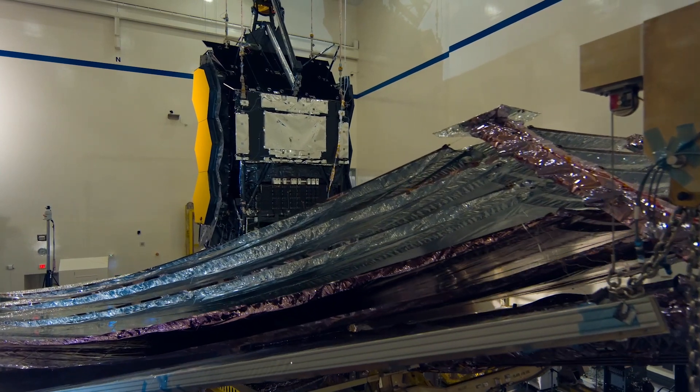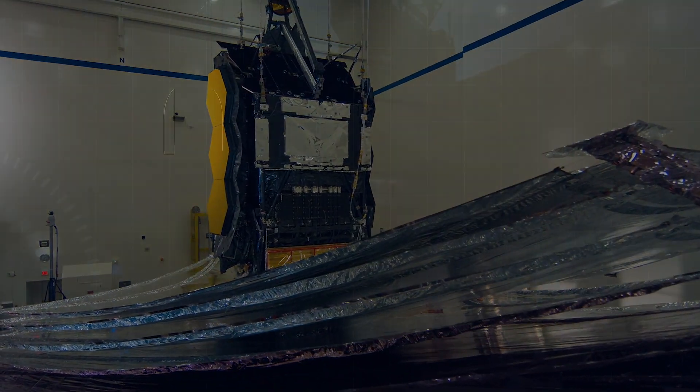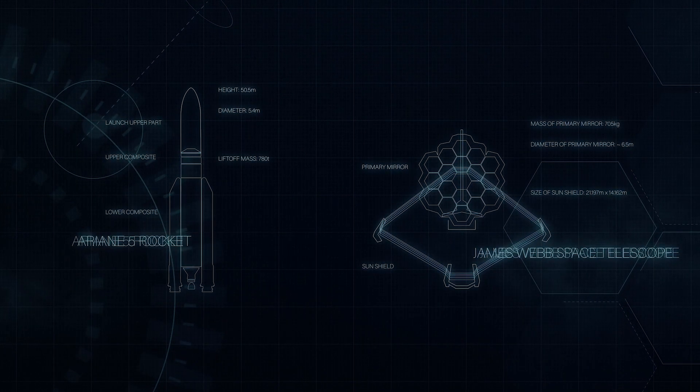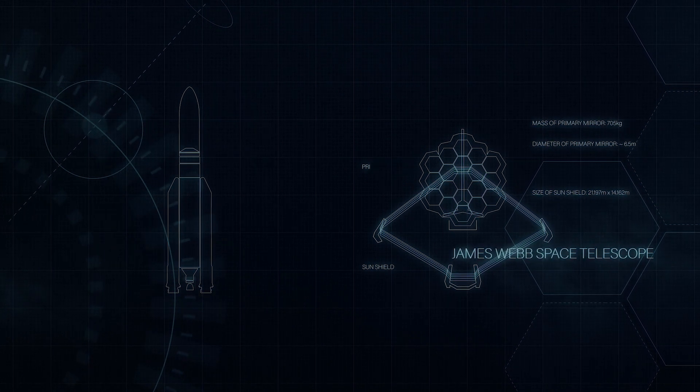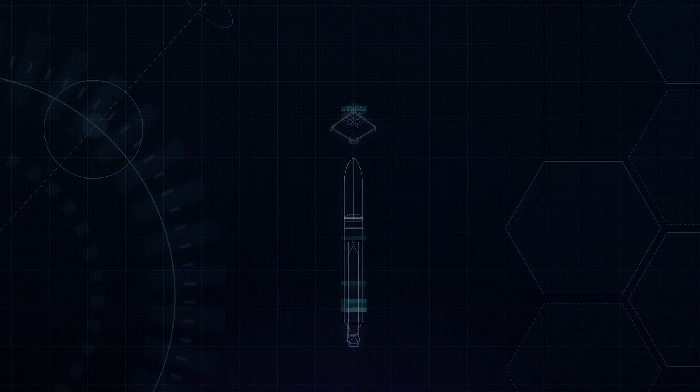It is very, very big. The Webb Telescope is as tall as a three-story building and as long as a tennis court. It is so big that it has to fold origami style to fit inside the rocket to launch. The telescope will unfold, sunshield first, once in space.